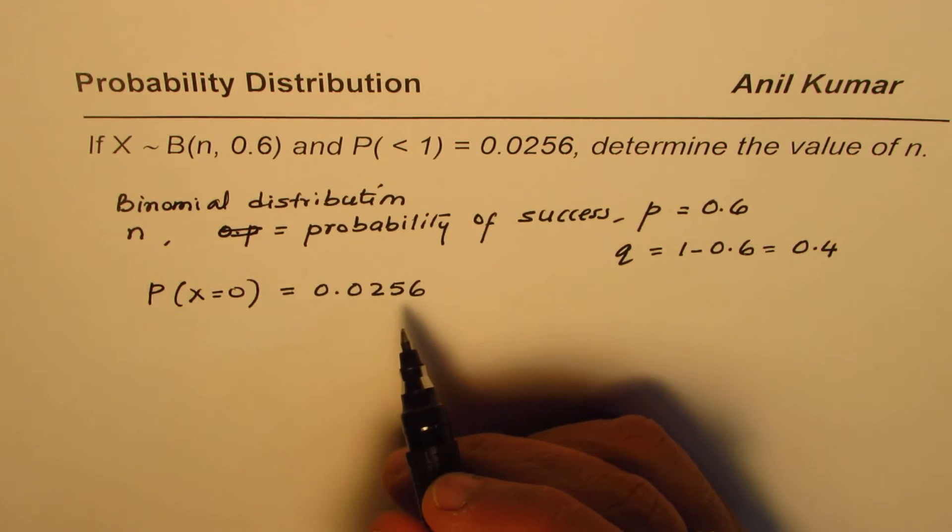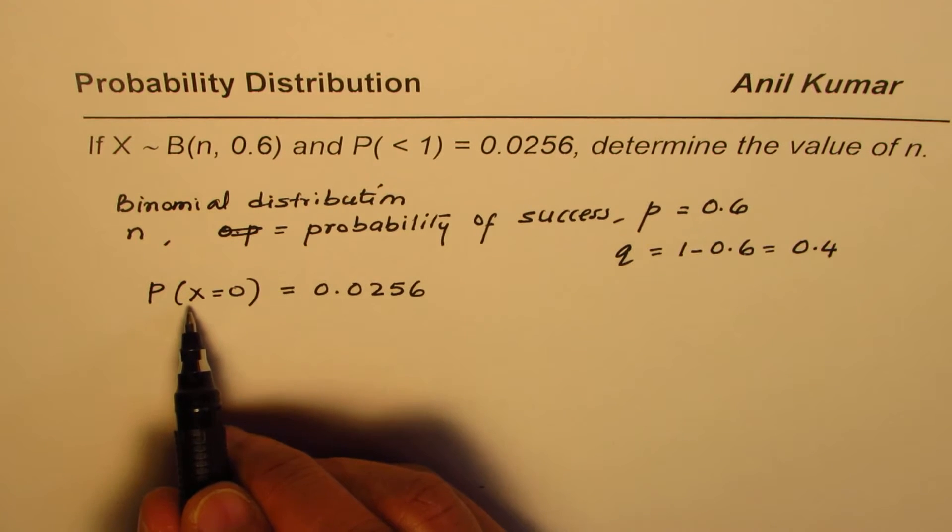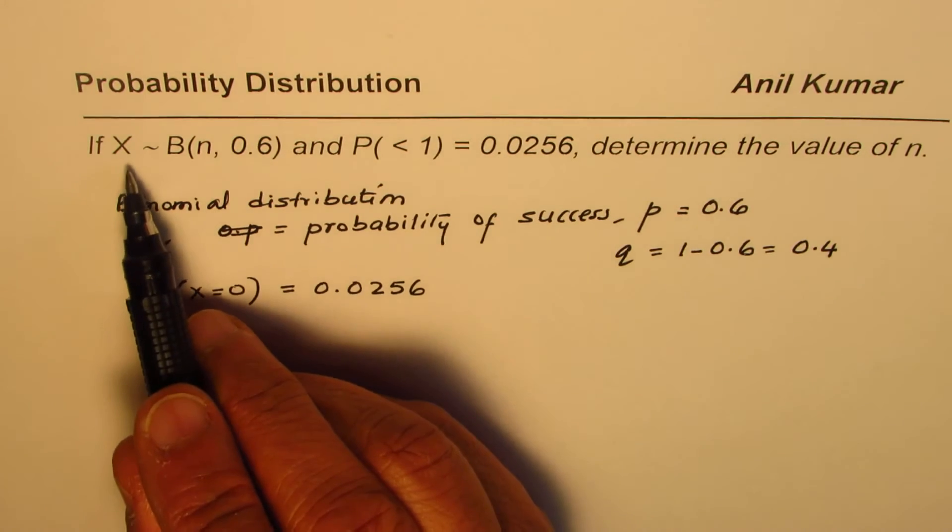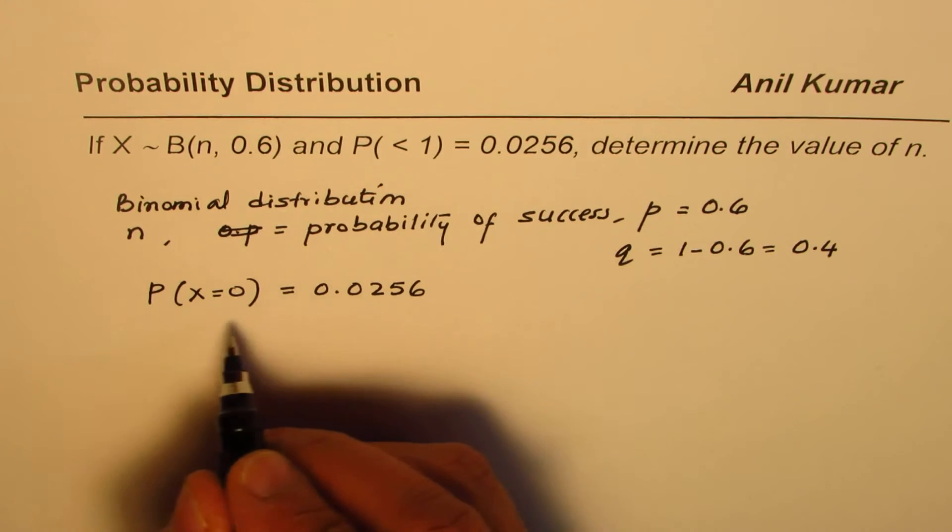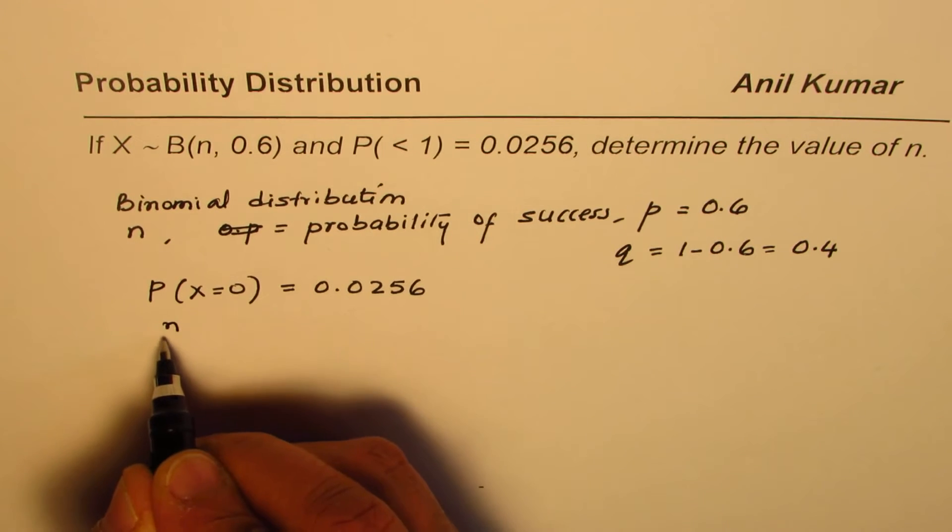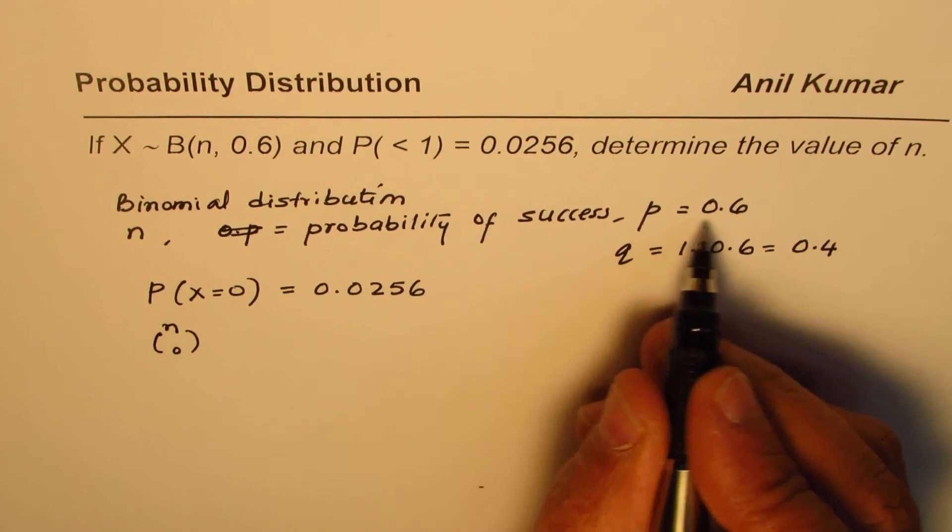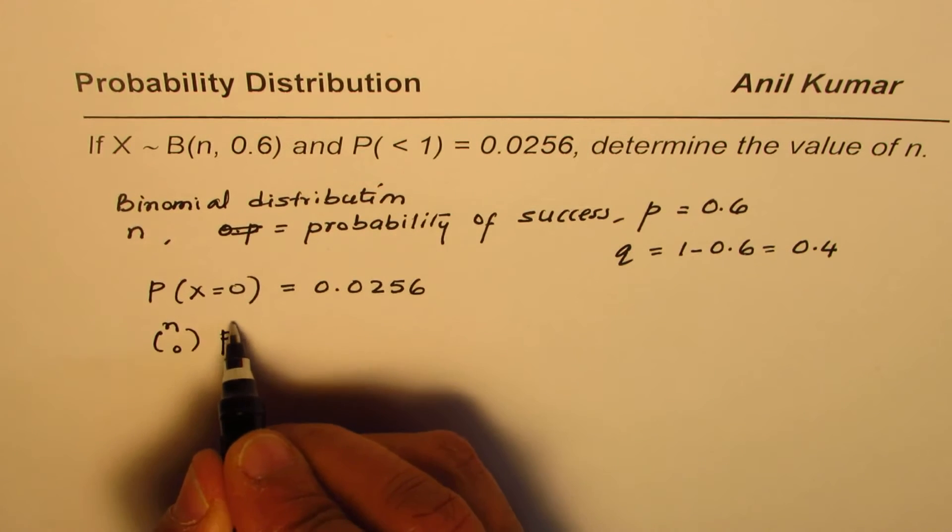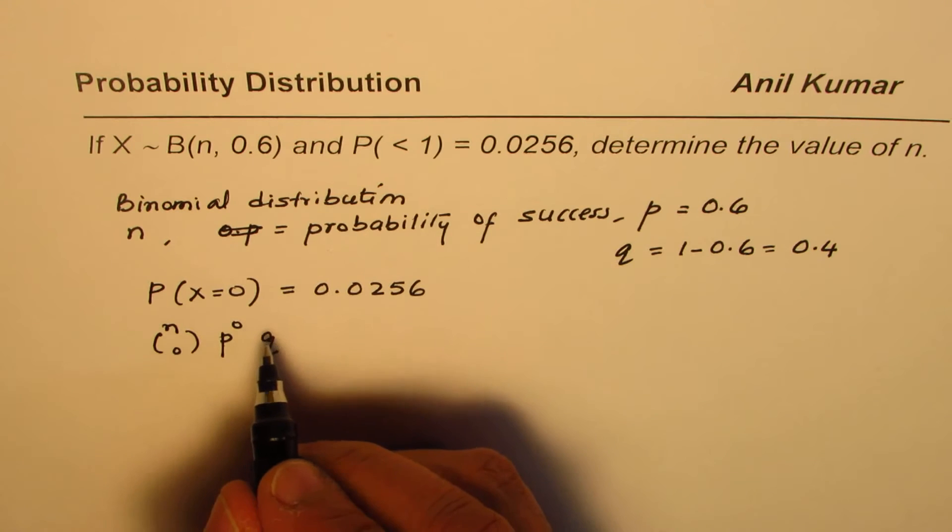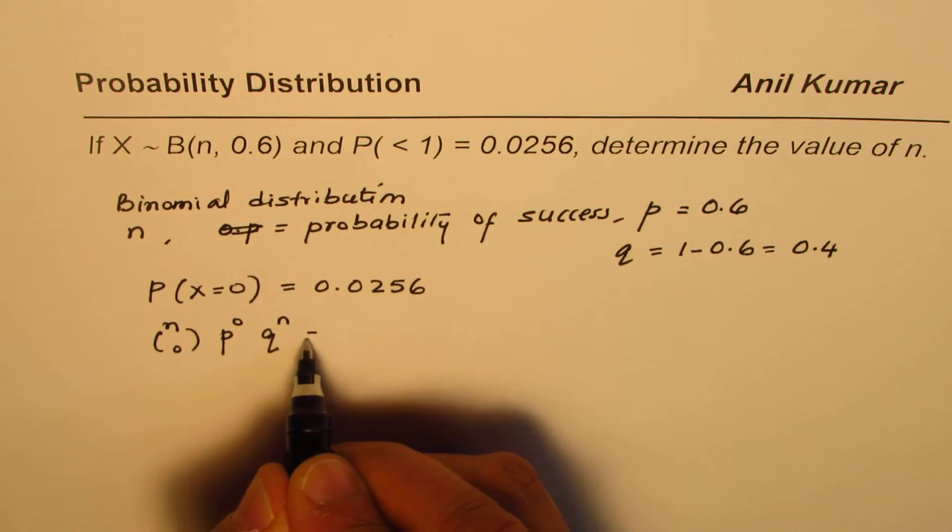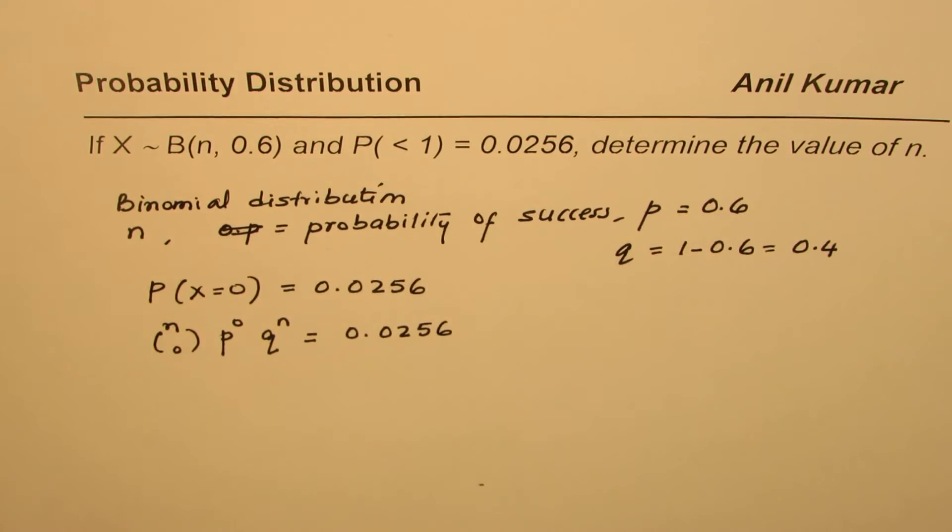Now, in case of binomial distribution, what is the probability for the random variable X to be equal to 0? That's what you need to figure out. So we know this is nC0, success is p, so we can write p to the power of 0 times q to the power of n, and that should be equal to 0.0256.